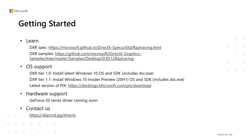Game developers can find feature specs and samples on GitHub, then upgrade to the latest Windows 10 OS and SDK and download the latest PIX on Windows. To use DXR Tier 1.1, game developers need to join the Windows 10 Insider Program for OS and SDK preview for 20H1 until it is released to the public. Driver support by GeForce 20 Series is available today for DXR 1.0 and coming soon for DXR Tier 1.1. Don't forget to come to our Discord channel to raise your questions.